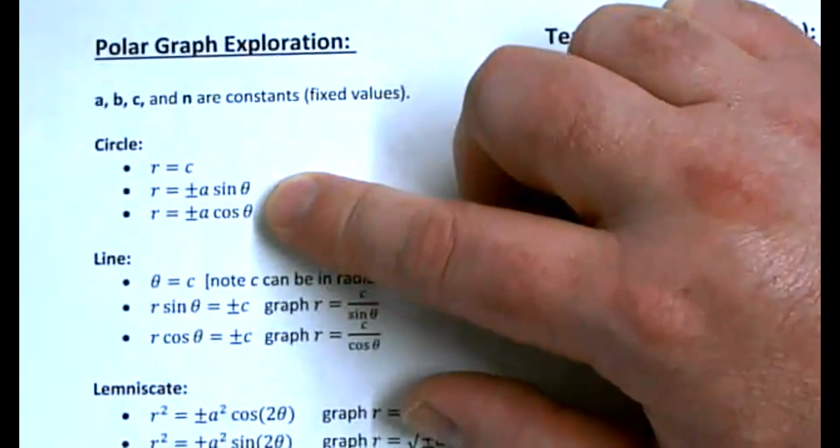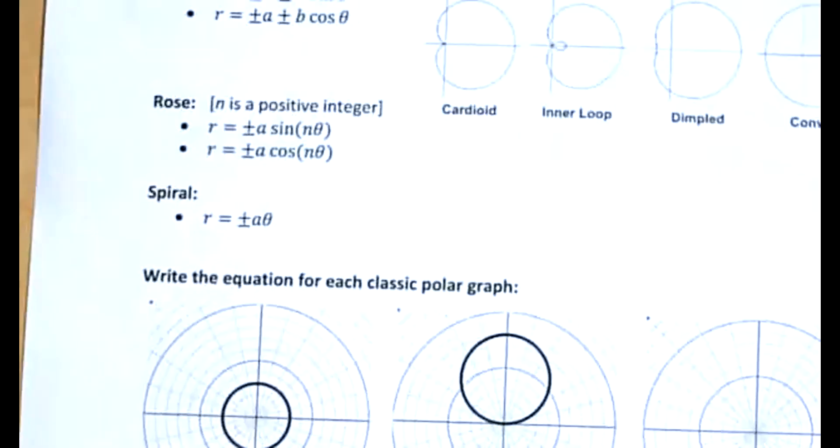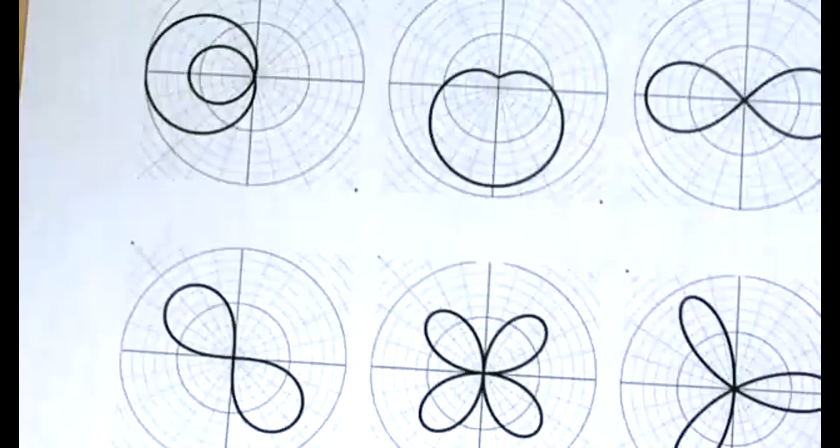So my recommendation is that you start with a circle and that you graph in Desmos one of these versions of a circle and you see which one matches one of these graphs that you see at the bottom of the page and on the back side of the page.